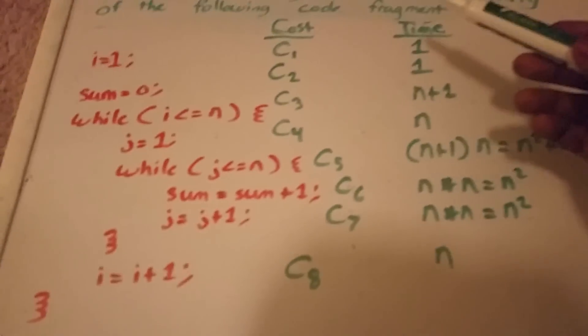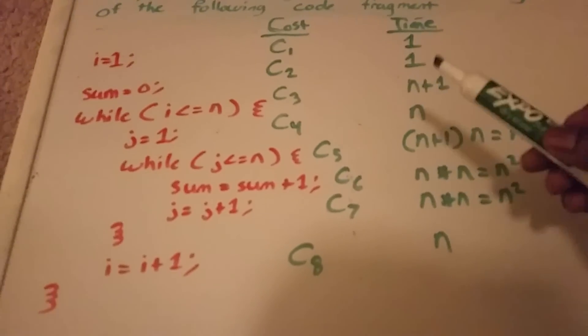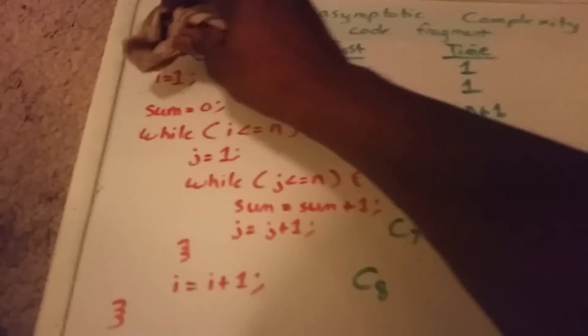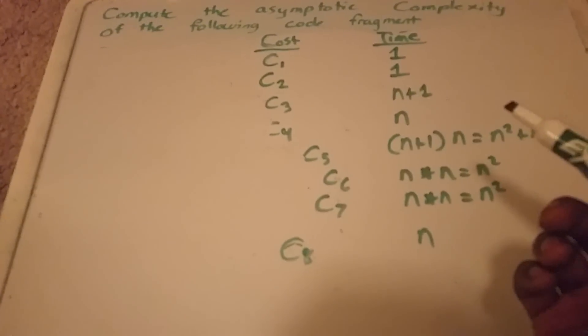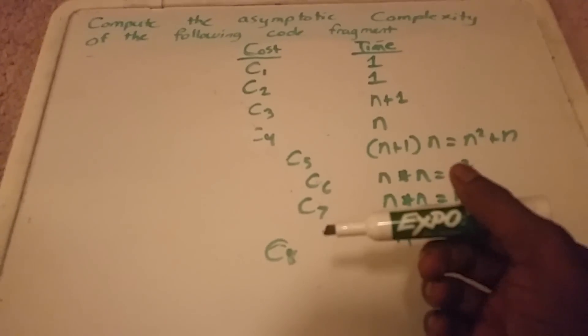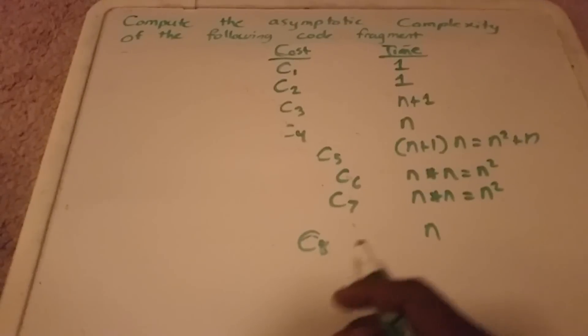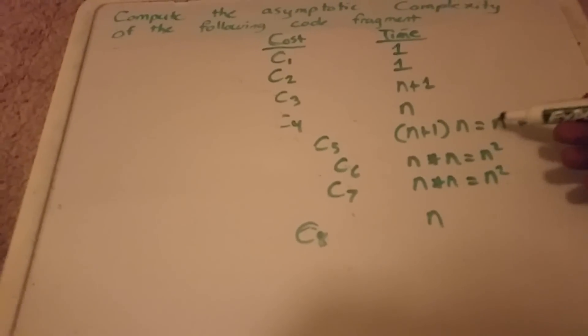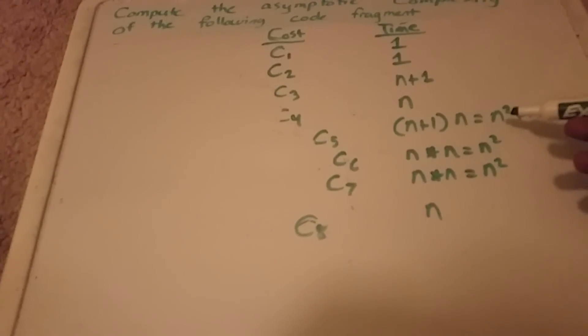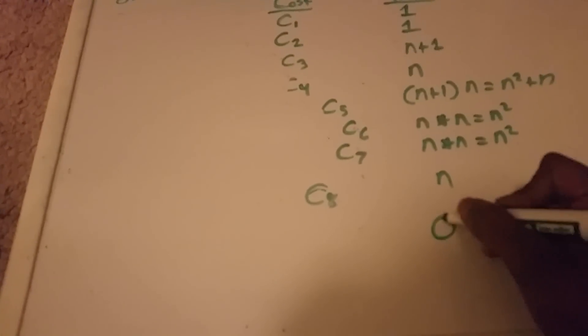Now we have all of our costs and times, so we need to multiply the costs by their times and add them together to figure out the running time. One shortcut is to just notice that the largest term here is n squared and conclude that this runs big-theta of n squared or big-O of n squared. The more mathematical way is shown next.